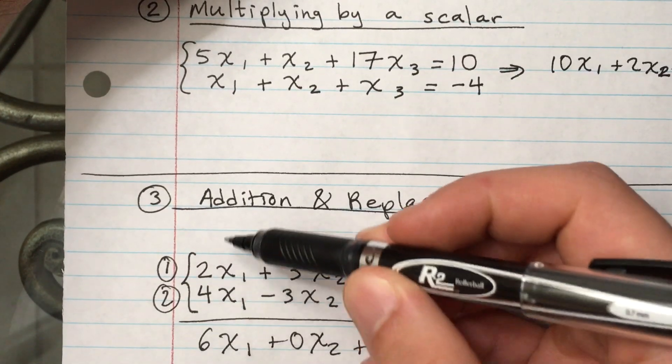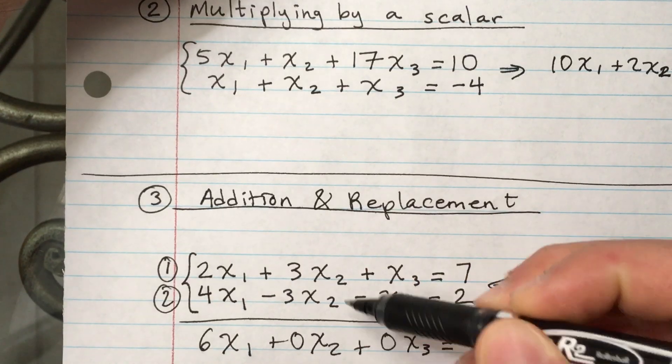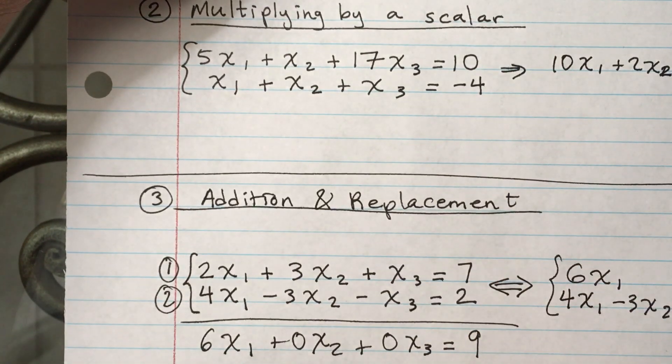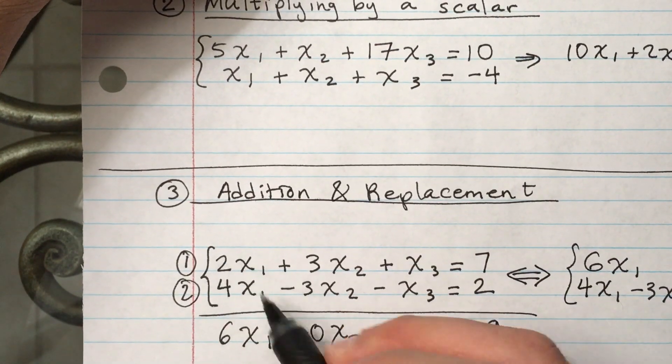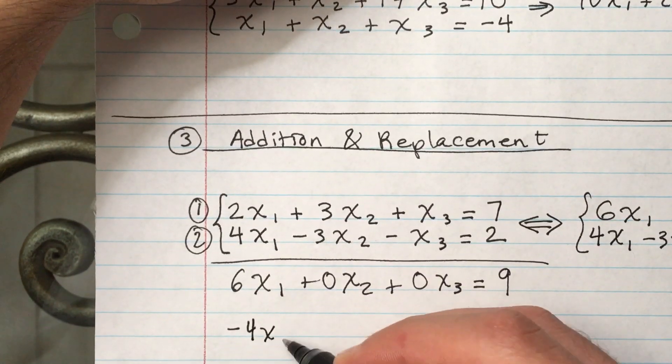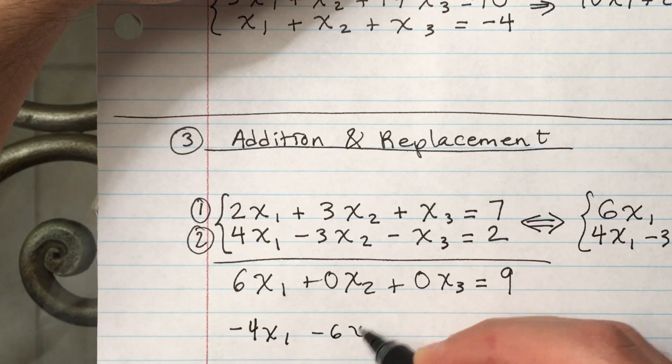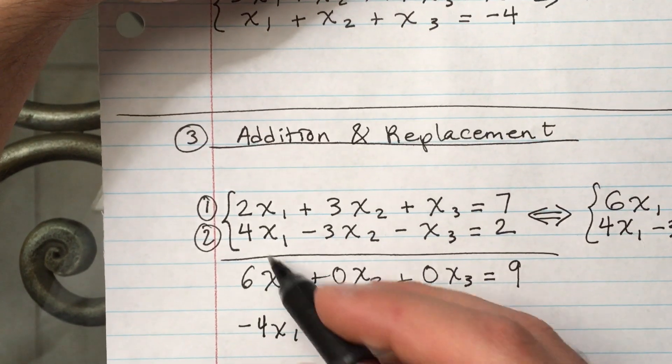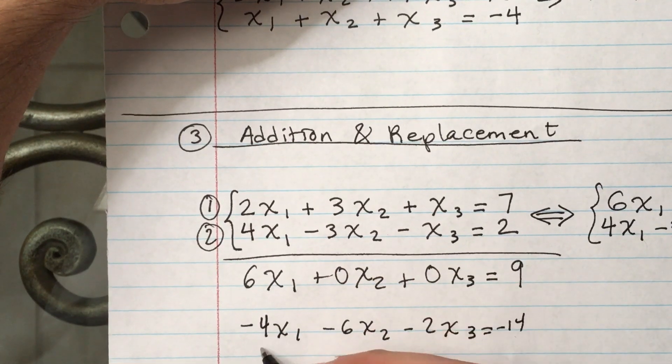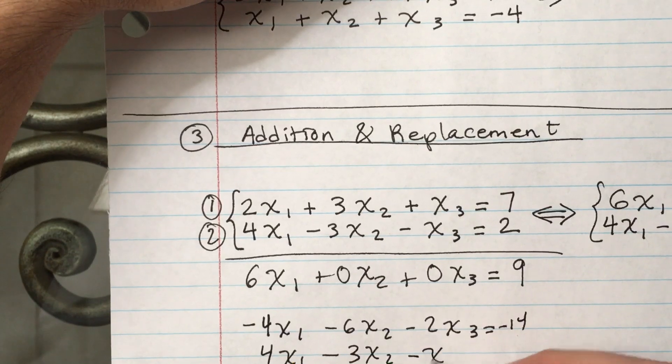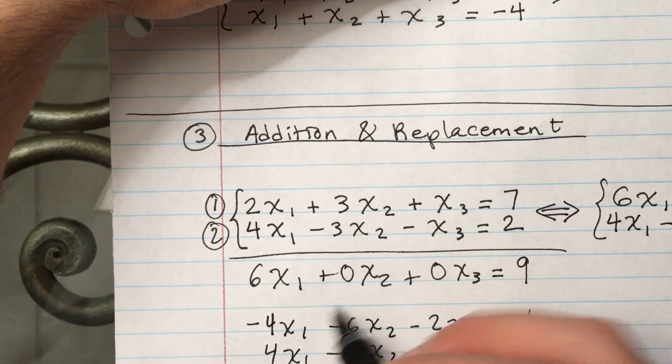Okay, multiply that by negative 2, so now I have a coefficient of negative 4 here for the x₁, and once I add those two I would cancel out the x₁. If I multiply by negative 2 on the top, I'd get negative 4x₁ minus 6x₂ minus 2x₃ equals negative 14. And then row 2 I didn't do anything to it, I'm just going to write it down the way it is: 4x₁ minus 3x₂ minus x₃ equals 2.